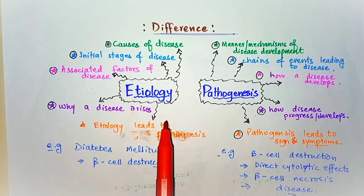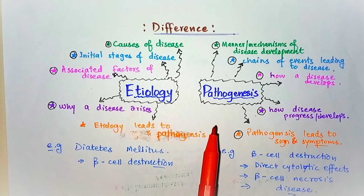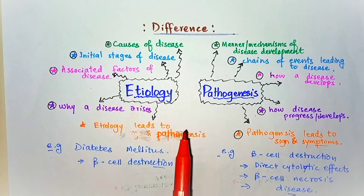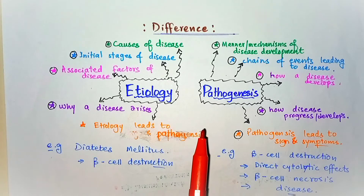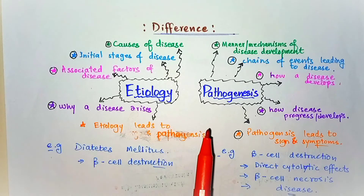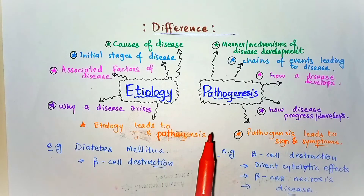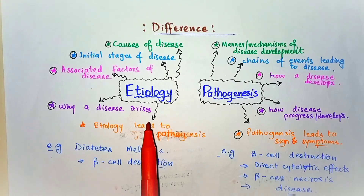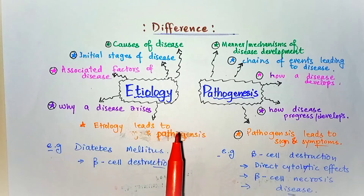Defining the etiology and pathogenesis of a disease is not only essential for understanding the disease, but is also the basis for developing rational treatments and effective preventive measures. Thus pathology provides the scientific foundation for the practice of medicine. So we should know the etiology and pathogenesis before studying pathology.